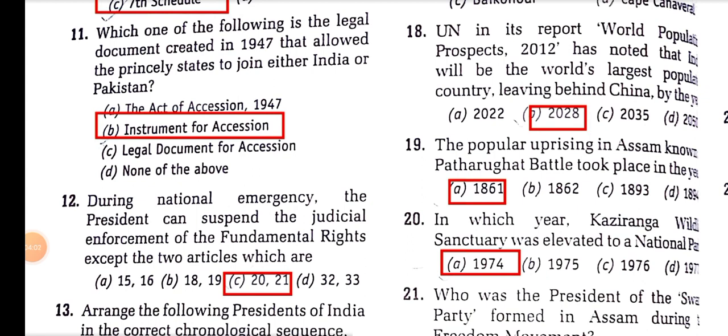The popular uprising in Assam known as the Patharughat Battle took place in the year 1861. This Patharughat Battle is also known as Assam's Jallianwala Bagh.